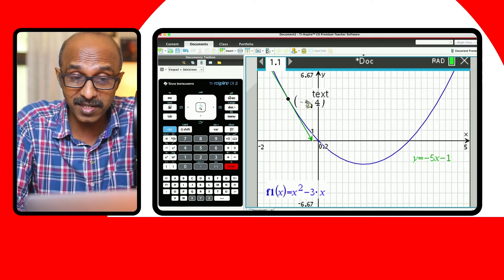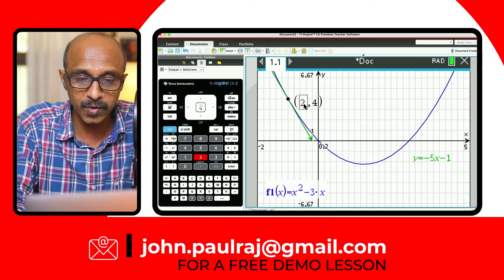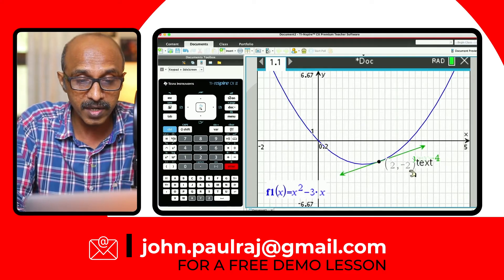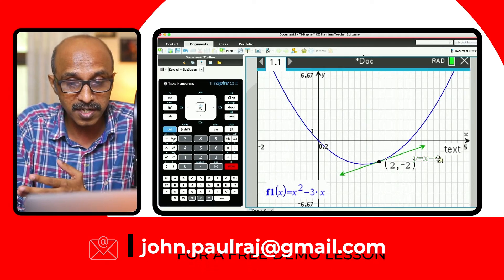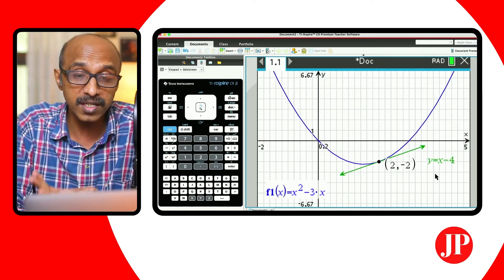So in the same way, I can just say, okay, I want the gradient at 2, gradient of the tangent at 2. And there you go. So at 2 comma negative 2, that's a new point. And there's the new equation of the tangent. The slope of the tangent at that point is 1. So this is a really cool technique.